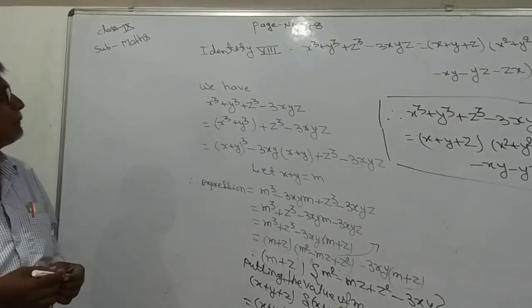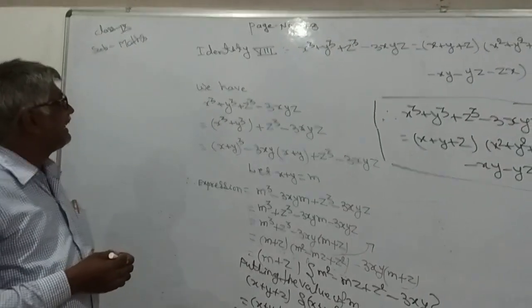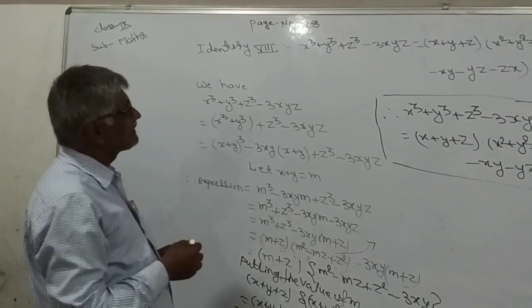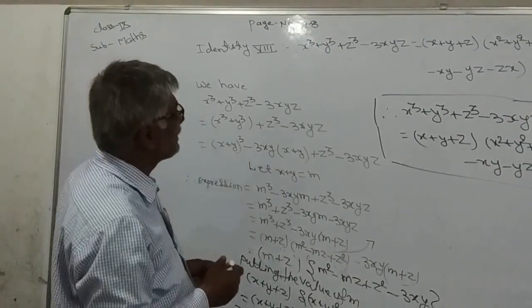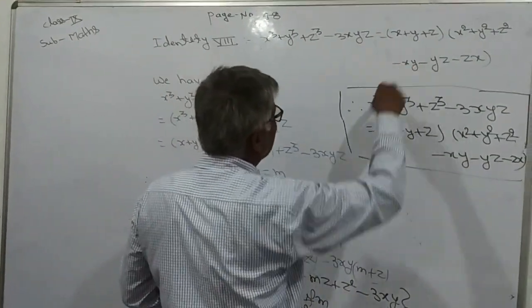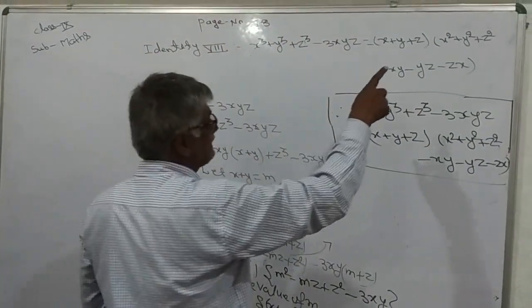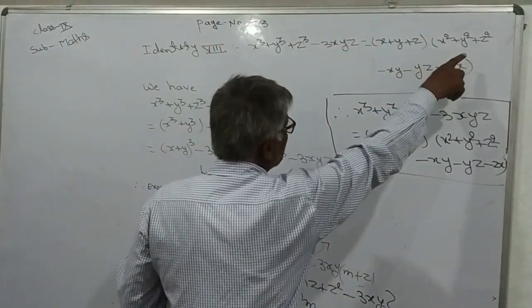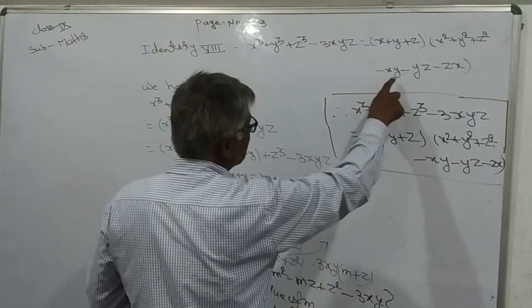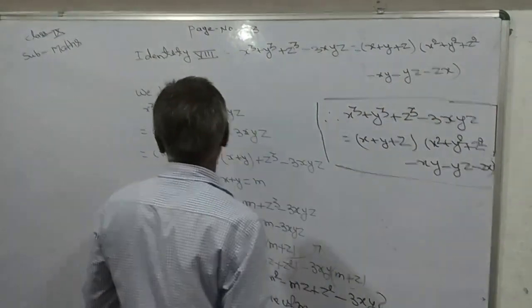Today I am going to start page number 48 in NCERT 8. We need to verify that x³ + y³ + z³ − 3xyz equals (x + y + z)(x² + y² + z² − xy − yz − zx).